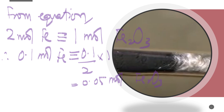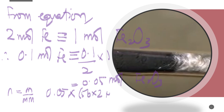Now find the mass of iron trioxide using: mass = number of moles × molar mass. Molar mass of Fe2O3 = (56 × 2) + (16 × 3) = 112 + 48 = 160. Mass = 0.05 × 160 = 8 grams. This is one mark.